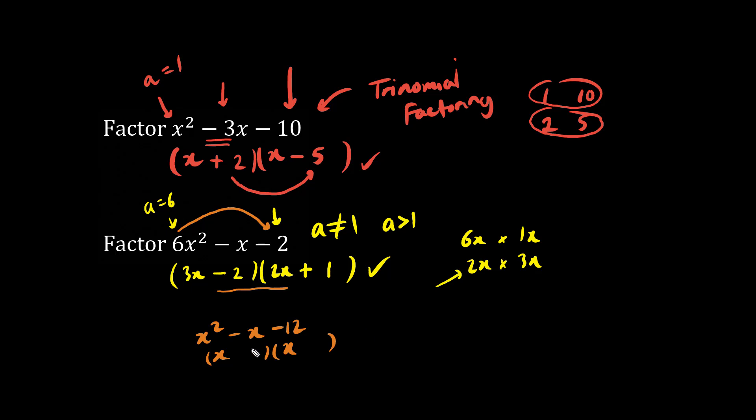We're going to factor normally what times what becomes negative 12 but adds to be negative 1. Let's try 3 and 4. We'll put a minus here and a plus here. Indeed, we multiply to be negative 12. And we add these numbers and it becomes negative 1. This is correct, but we're not quite done yet.